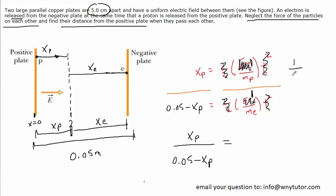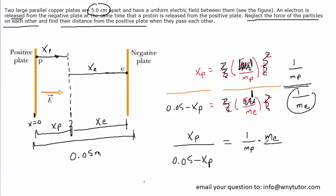We have one over the mass of the proton divided by one over the mass of the electron. When dividing two fractions, we use keep-change-flip: keep the first fraction the same, change division to multiplication, and flip the second fraction to get Me over one. Multiplying the fractions gives Me over Mp. The masses of the electron and proton are known values found in the back of your textbook.